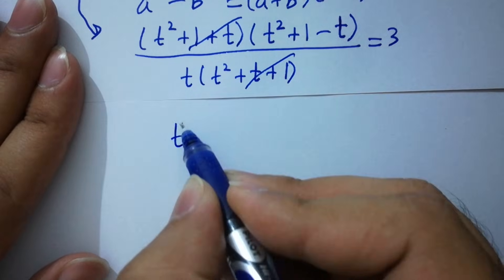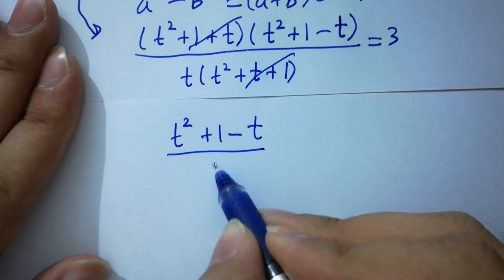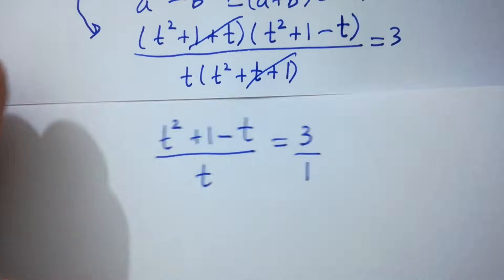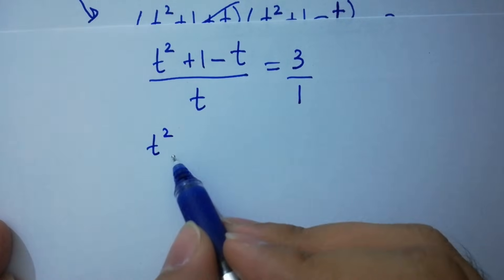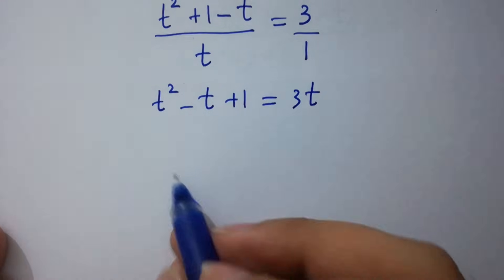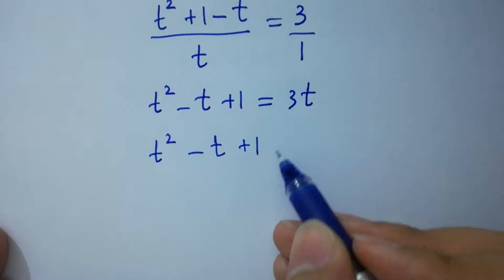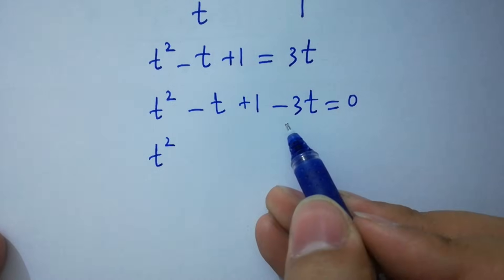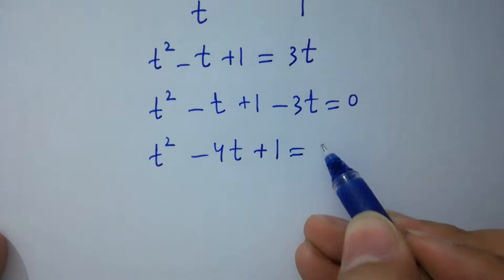After cancelling, we get t squared minus t plus 1 over t equals 3. By cross multiplication, t squared minus t plus 1 equals 3t, which gives t squared minus 3t plus 1 equals 0.